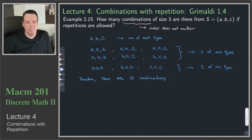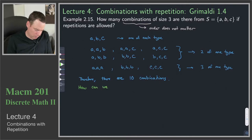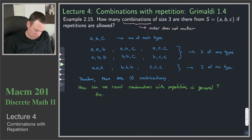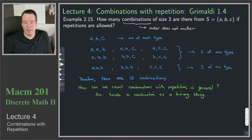We did that by listing. Can we do this without having to list them? That's our follow-up question: how can we count combinations with repetition in general? The idea is to encode a selection as a binary string — binary strings are objects we already know how to count, so all we have to do is show how a selection corresponds to a binary string.